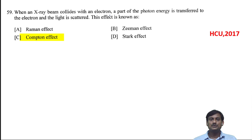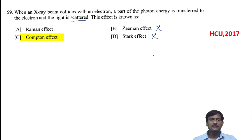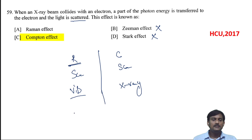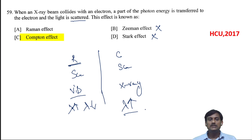When an X-ray beam collides with an electron, part of the photon energy is transferred to the electron and the light is scattered. This is known as the Compton effect. The Zeeman and Stark effects involve splitting of energy levels, not scattering. In Raman effect, visible light is used and there is scattering, whereas Compton effect uses X-rays. So the effect described is the Compton effect.